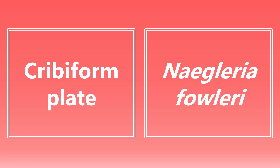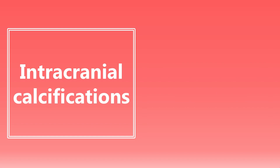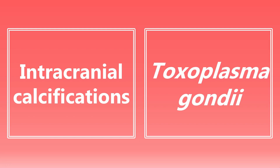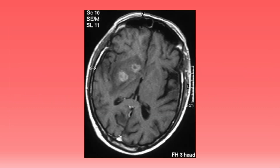Cribriform plate — this is really important because this is where Naegleria fowleri enters the brain to cause meningoencephalitis. So if you see any type of microbe invading the cribriform plate, or a CT showing damage to the cribriform plate, you want to be thinking about Naegleria fowleri. Intracranial calcifications — we need to know the causative organism: it's going to be toxoplasma gondii, the cause of toxoplasmosis. Here's that all-too-common CT scan showing the rim-like intracranial calcifications.